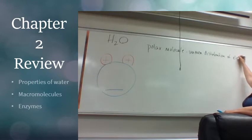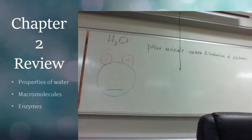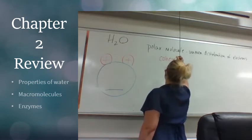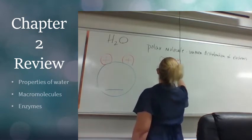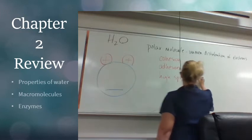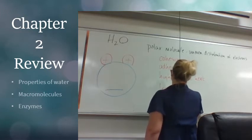So we call it a polar molecule because there's an uneven distribution of electrons. It's a polar molecule, it can do several things that other molecules cannot do. What were the four properties of water that we discussed? Cohesion, adhesion, high specific heat, and less dense as a solid. Very good.